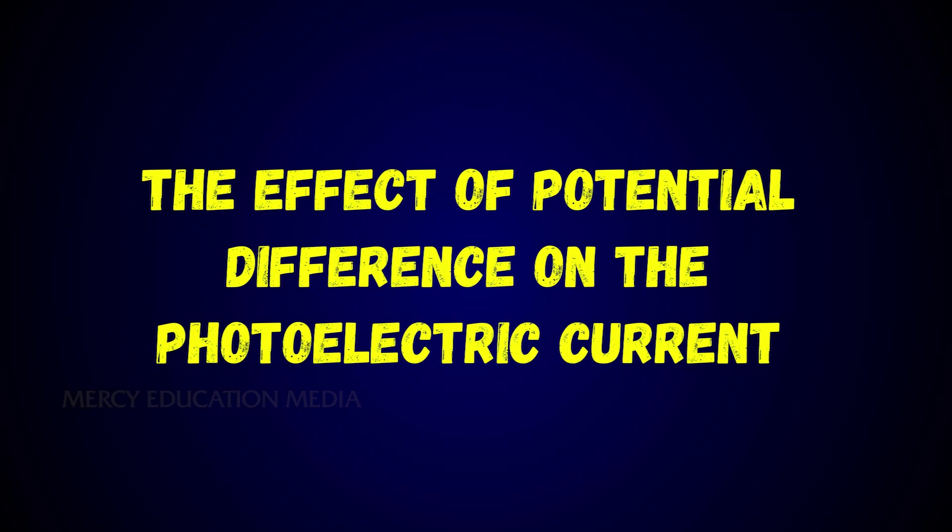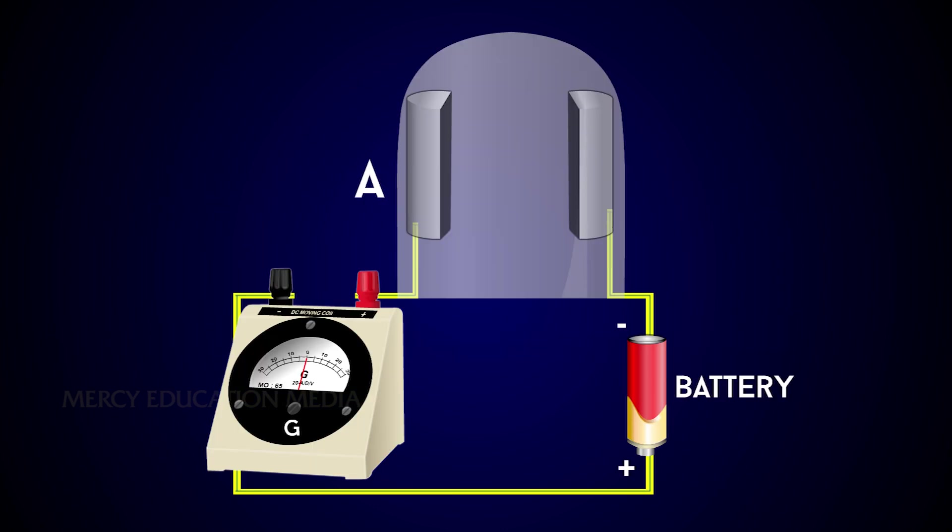Describe the effect of potential difference on the photoelectric current. For a given metallic surface C, keeping the intensity I1 and the frequency of incident radiation constant, the effect of potential difference between the plates on the photoelectric current can be studied.